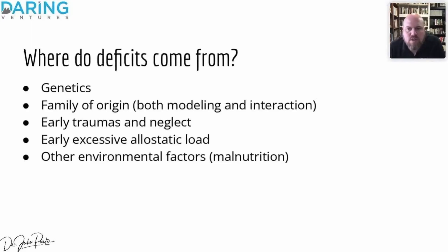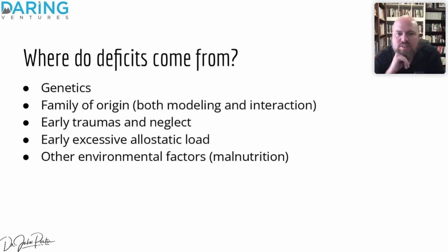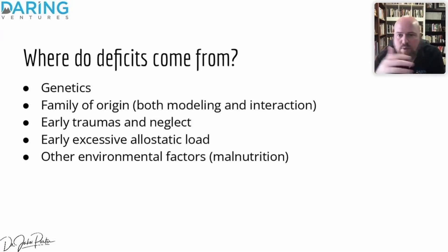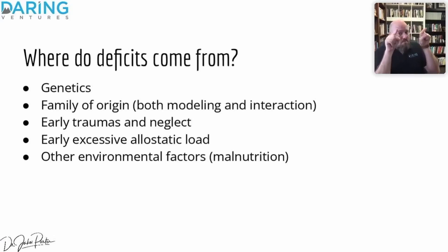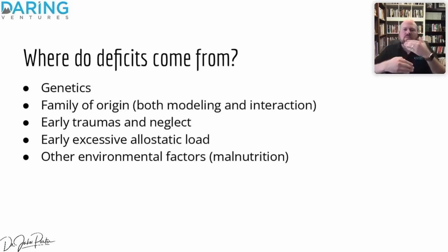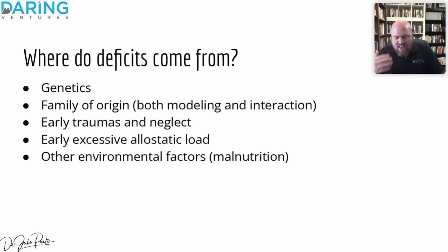Where do deficits come from? Well, genetics — some people are just born predisposed to certain deficits. They also come from family of origin, both through what's witnessed and modeled to us, and by the way we experience interactions — the way the people in our family of origin interacted with us can be a huge source of deficits.